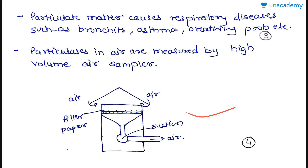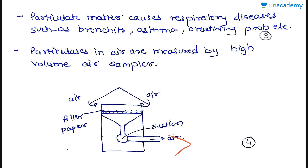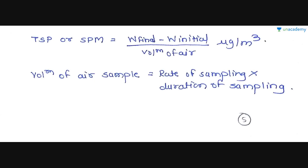This is the high volume air sampler. From the top, air enters the sampler. A filter paper is provided inside. Air passes through the filter paper, and due to suction, it is then sent outside. All the particulate matter gets trapped in the filter paper. The final and initial weights of the filter paper are taken to find the TSP — total suspended particulate matter.